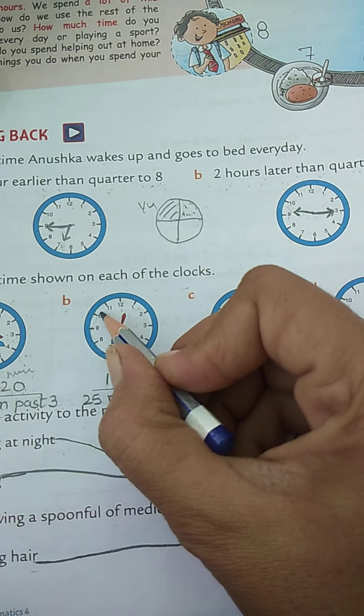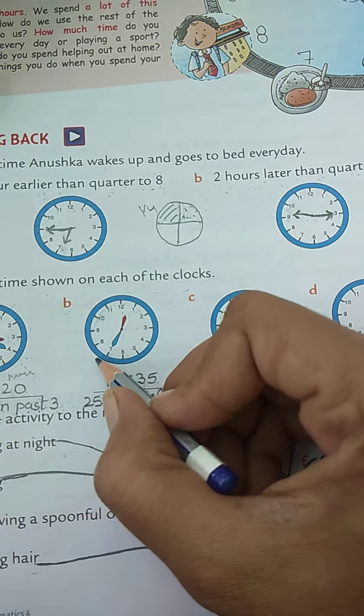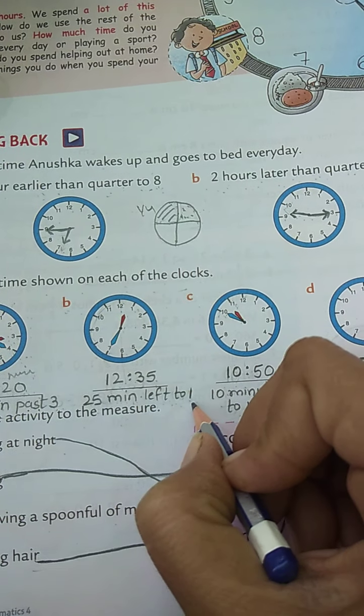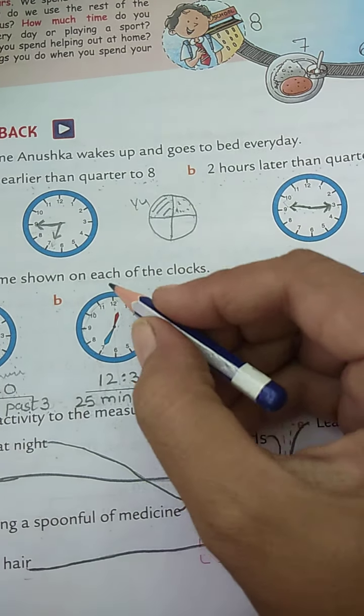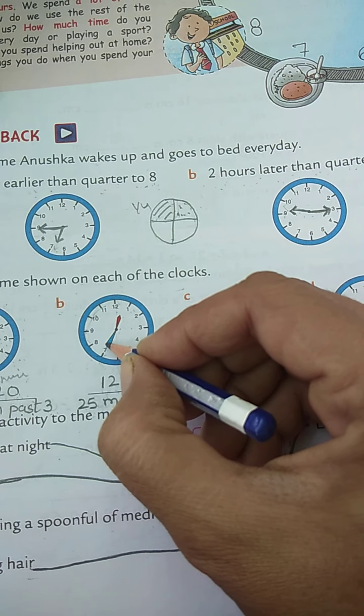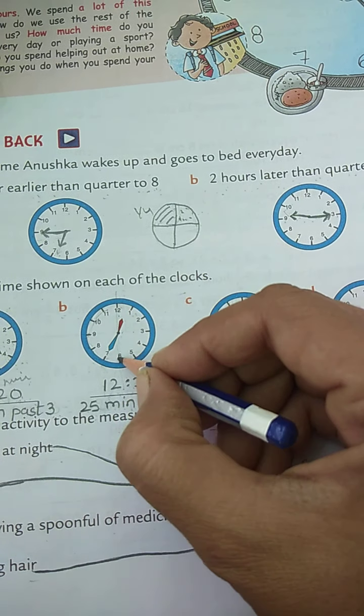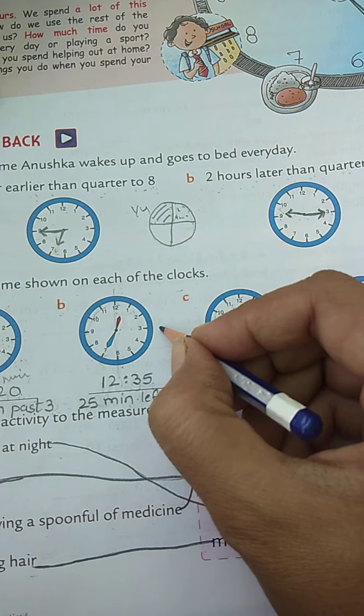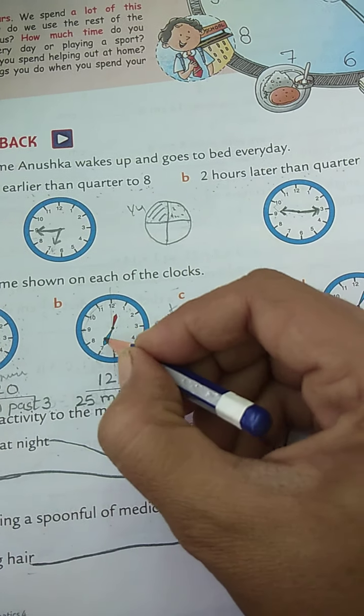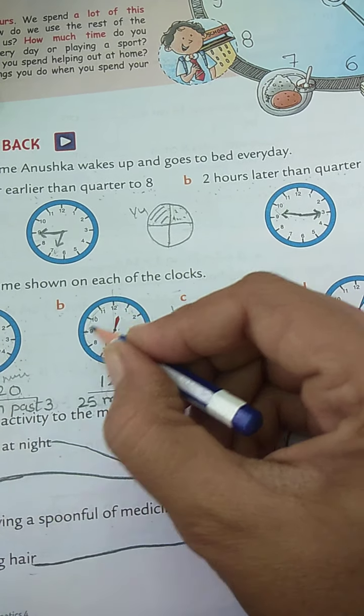25 minutes left to 1. Children, I have explained in my last video that when the big hand is between 12 to 6, you have to use past, and when it is between 6 to 12, this side, you have to use left.